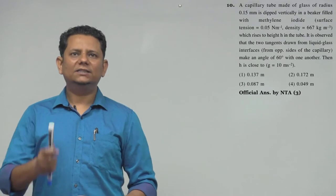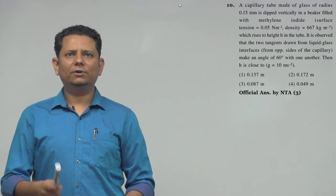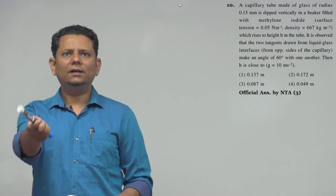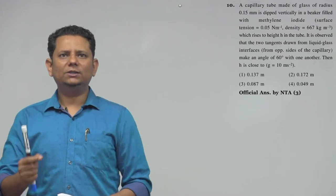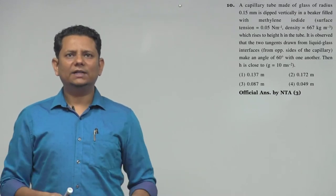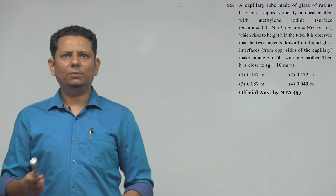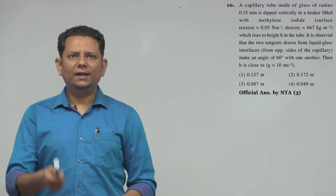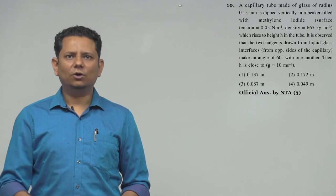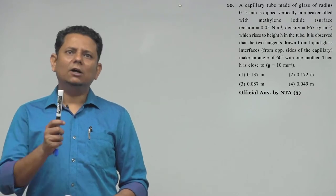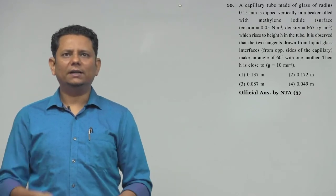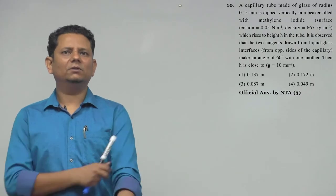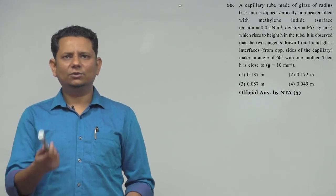The question says: a capillary tube made of glass of radius 0.15 mm is dipped vertically in a beaker filled with methylene iodide. Surface tension T = 0.05 N/m, density ρ = 667 kg/m³. The liquid rises to height H. It is observed that the two tangents drawn from the liquid-glass interface from opposite sides of the capillary make an angle of 60° with one another. Find H. G = 10.